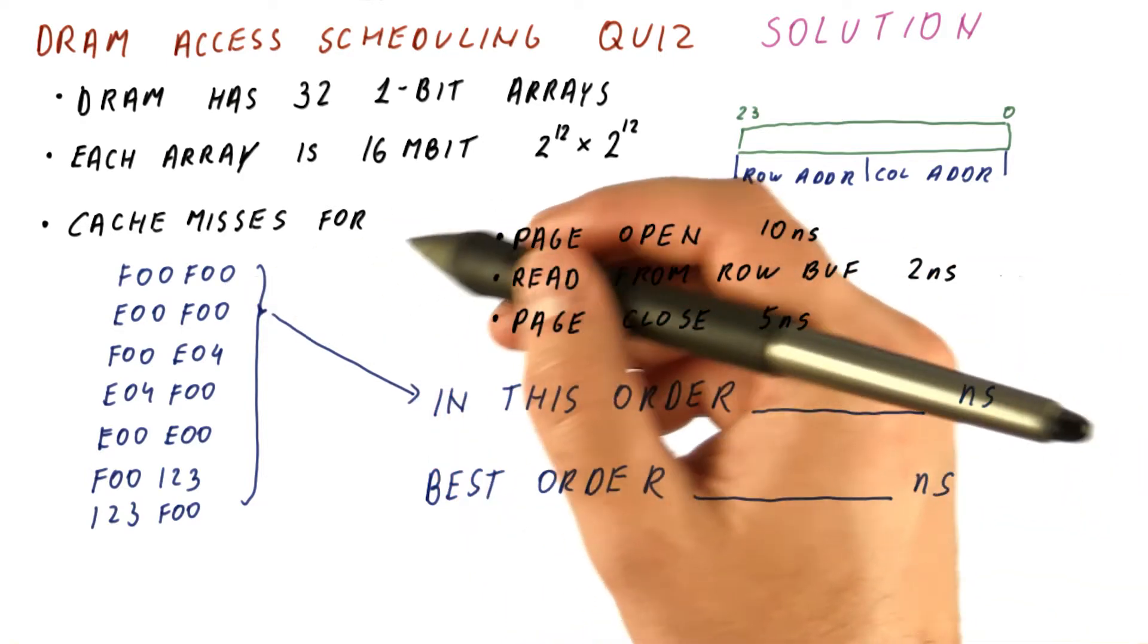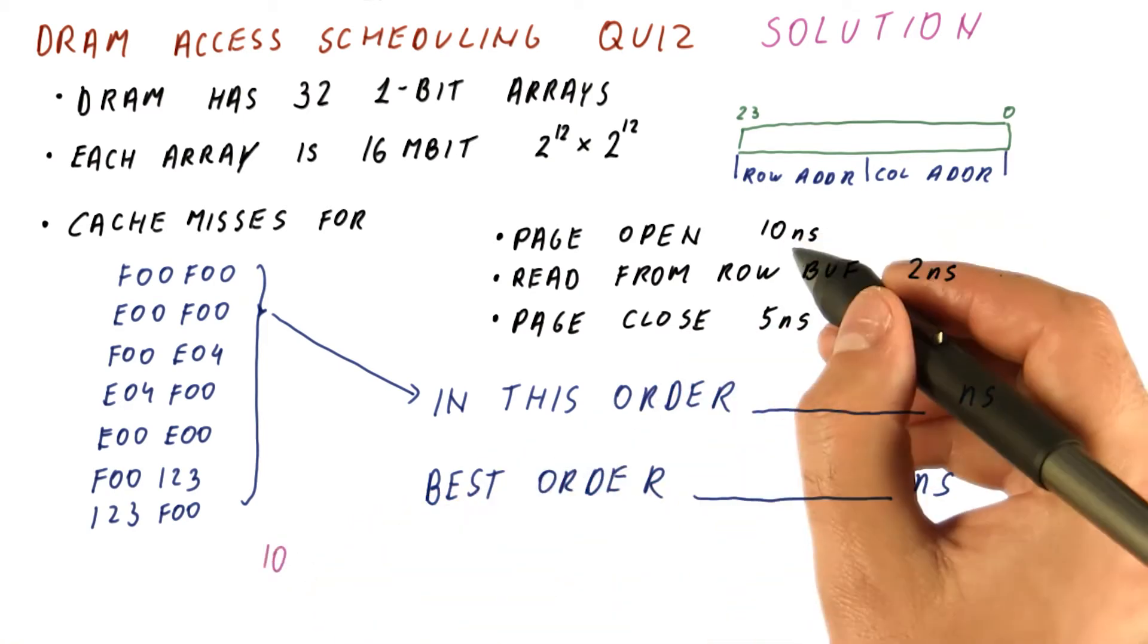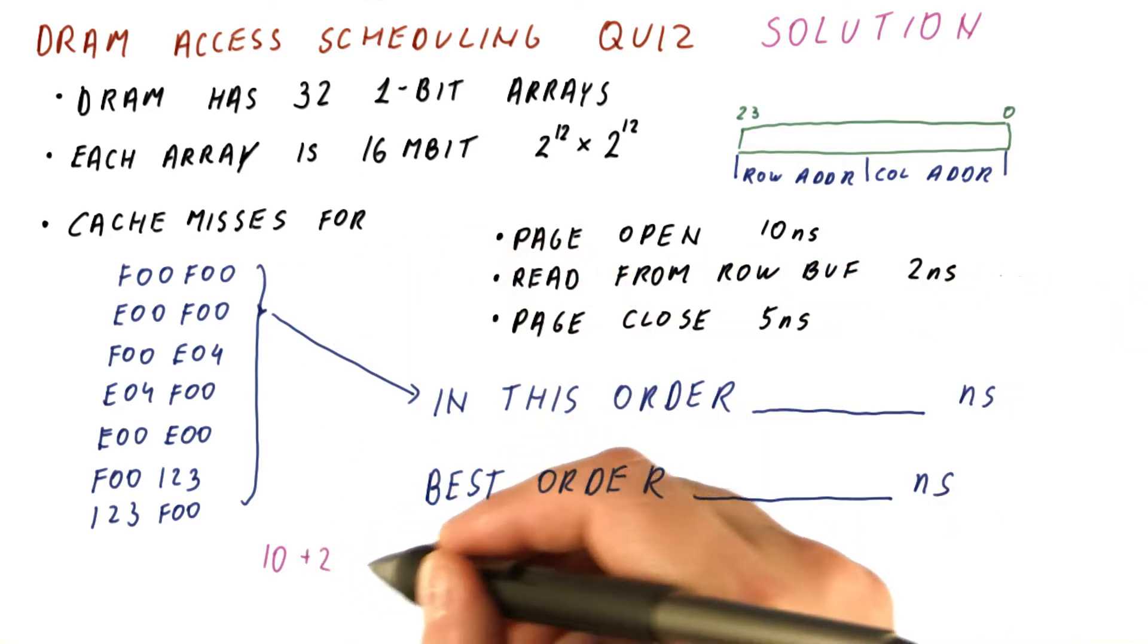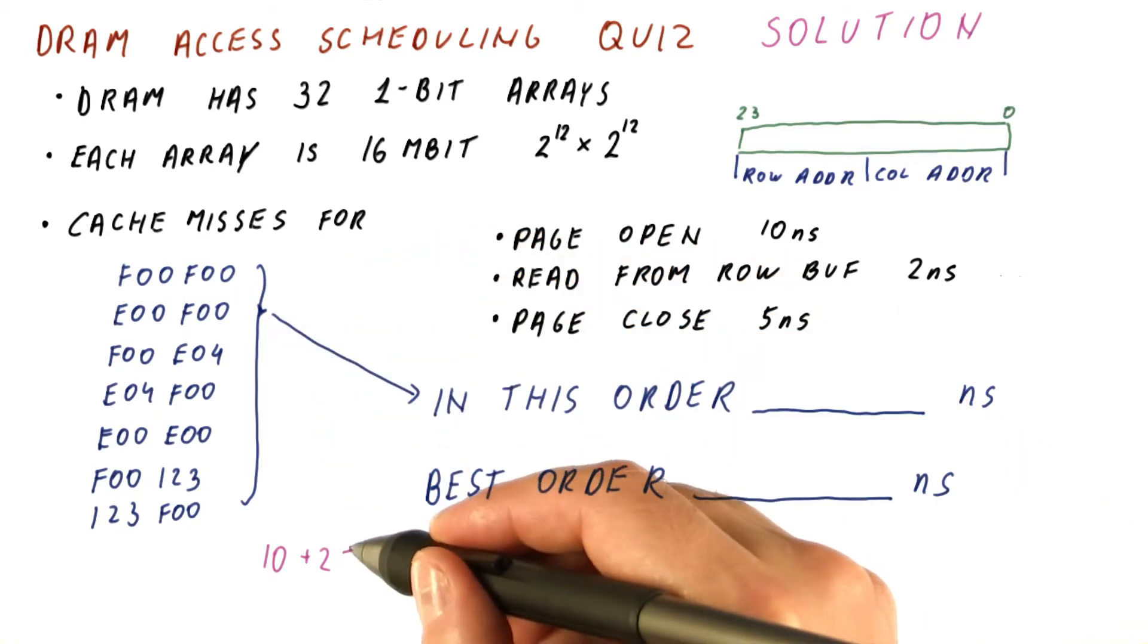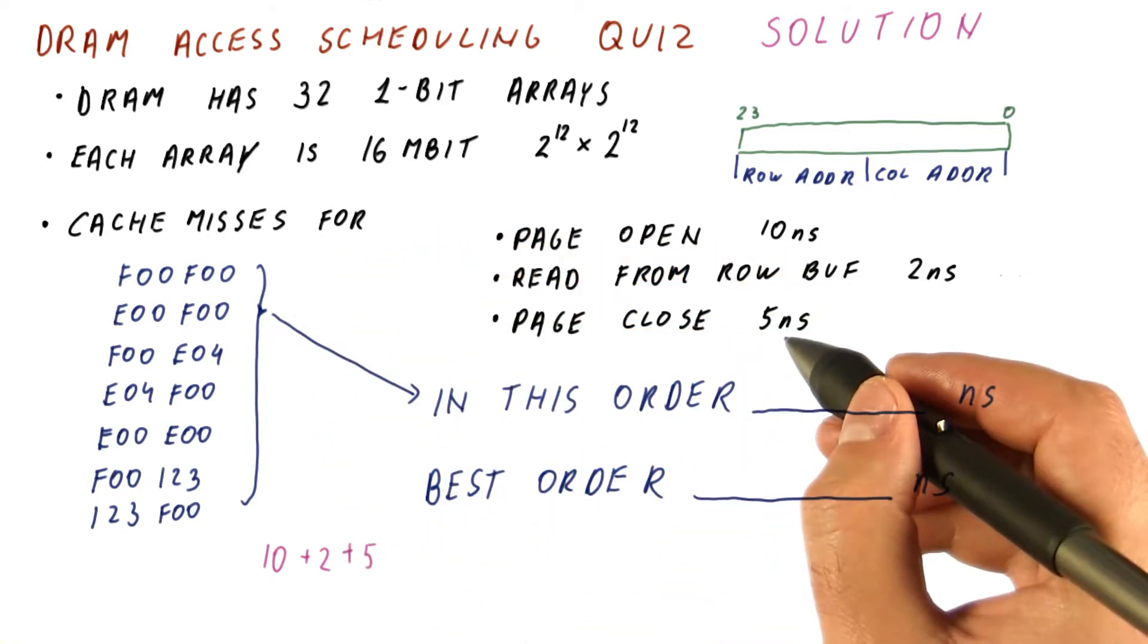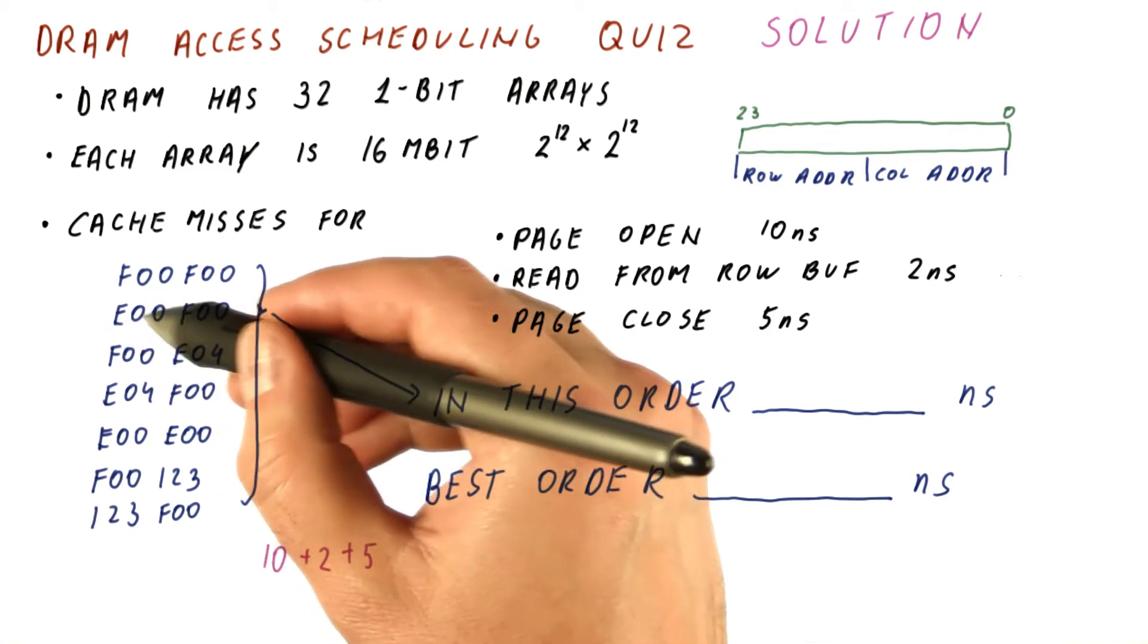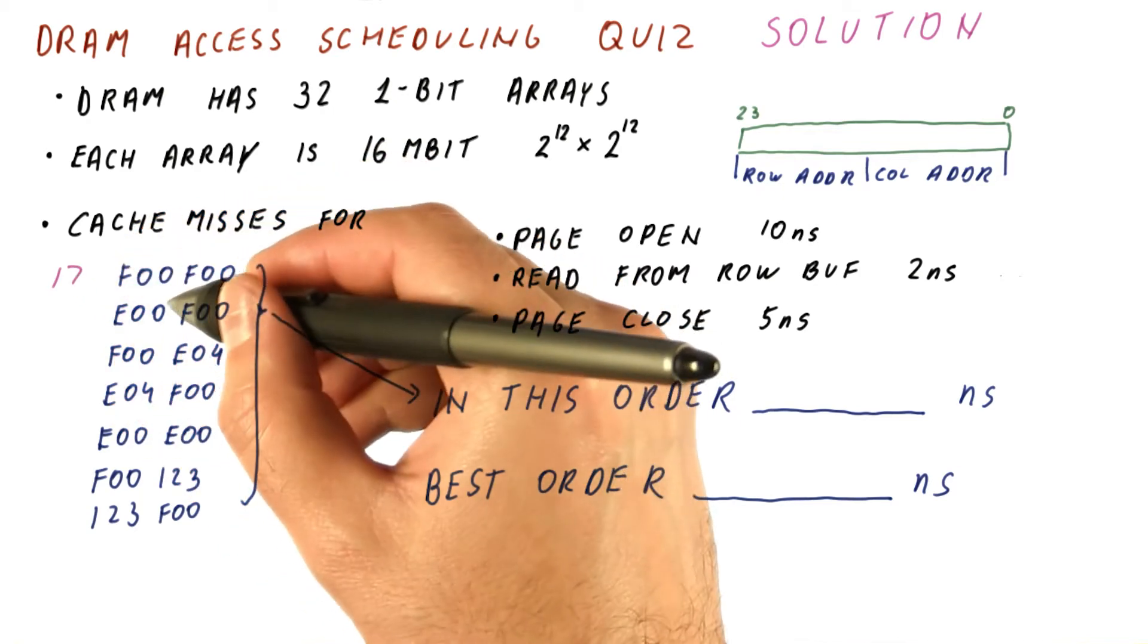So what we have here is the first one needs to be a page open. So we have 10 nanoseconds to open this first page. We will then read in two nanoseconds. Then we will close the page in another five nanoseconds, because the next one is on a different page. The row address is different. So we spent 17 nanoseconds here.